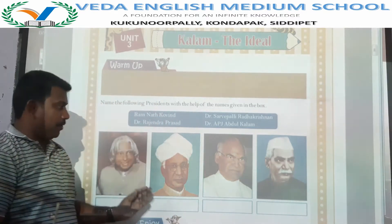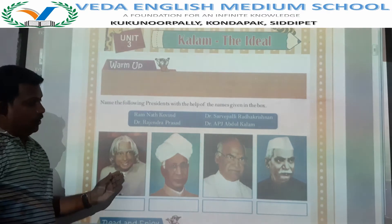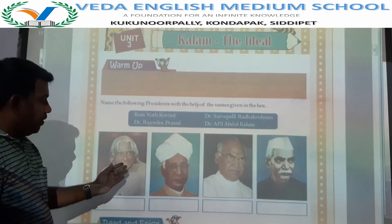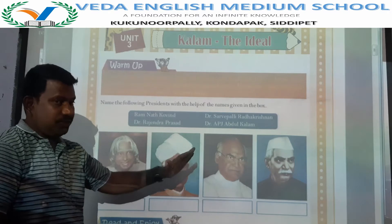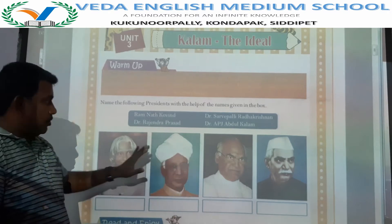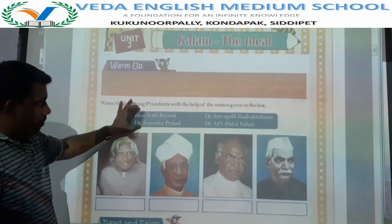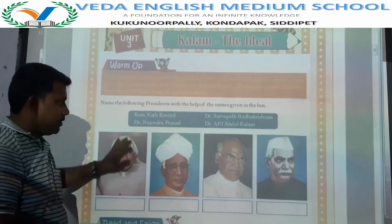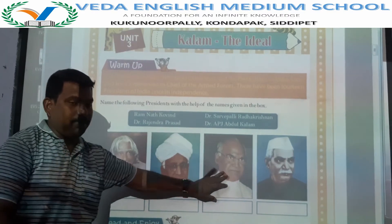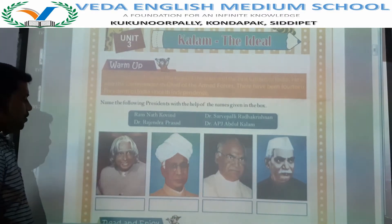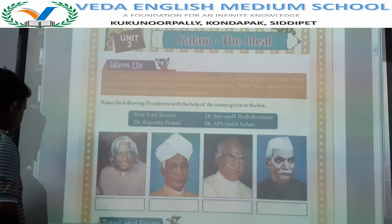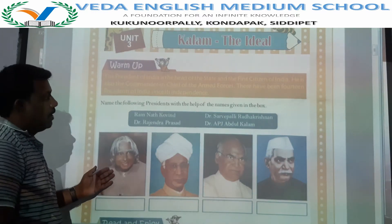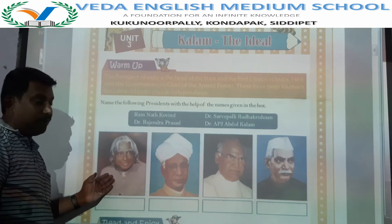Here you have been given some pictures. You have to identify the names of these persons. Their names have been given in the help box. With the help of this box, you can write the names of these persons. Who is the first person? The first person is APJ Abdul Kalam.